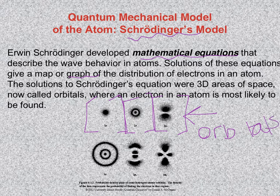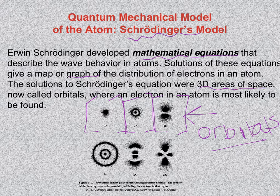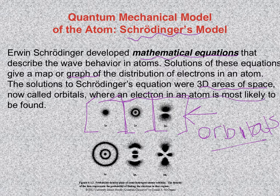It's important to understand what an orbital is. The rest of this is pretty abstract, but it is important to understand what an orbital is. An orbital is simply a 3D area of space where an electron is most likely to be found.